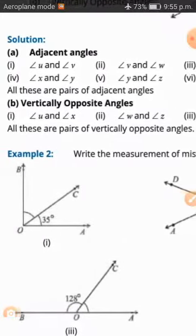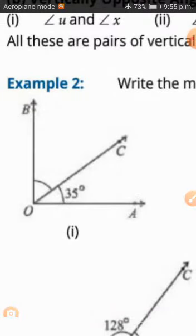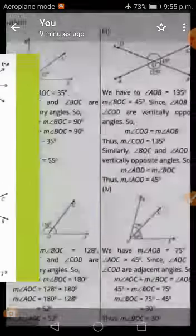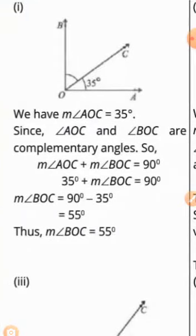Example 2: Write the measurement of missing angles. This is a straight line — perpendicular — and a right angle is made. When we add two angles, it will definitely be 90 degrees. Since the second angle is missing, this is a complementary pair, so we will subtract from 90 degrees. Angle AOC is 35 degrees, and AOC and BOC are complementary angles. So AOC plus BOC equals 90 degrees. Putting AOC as 35, BOC equals 55 degrees.